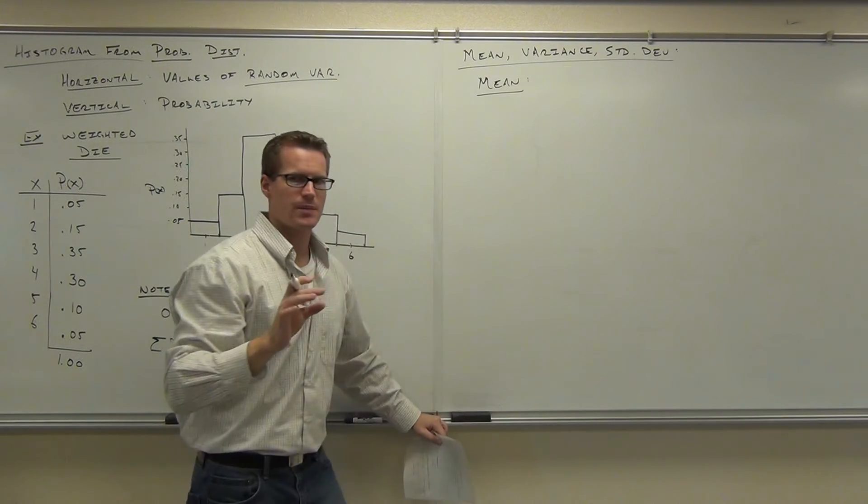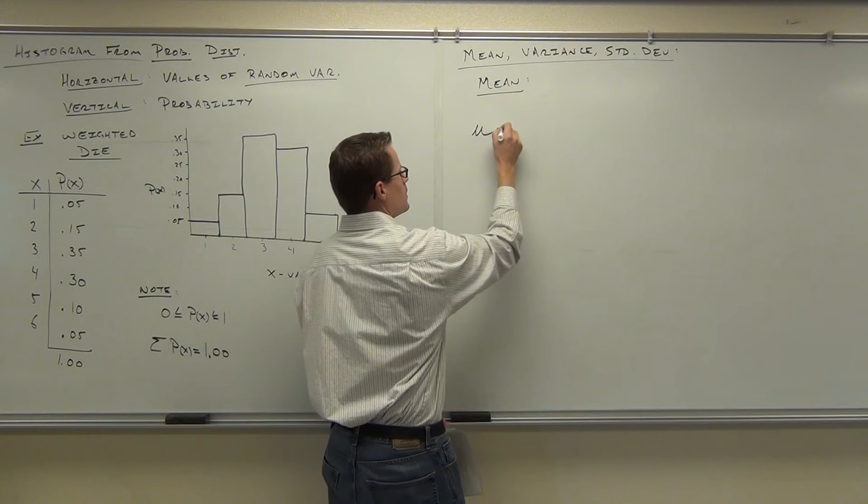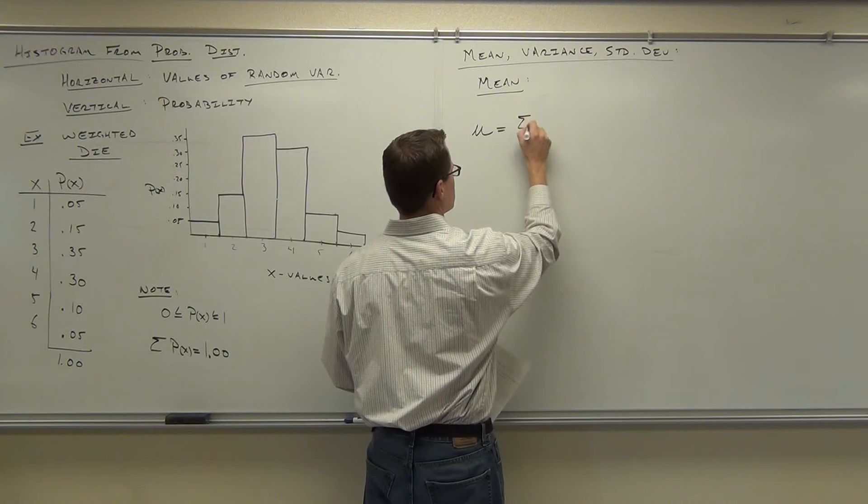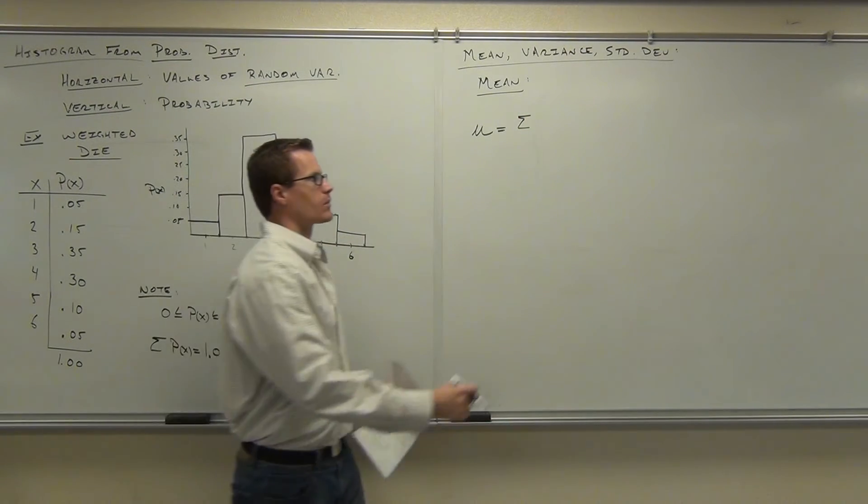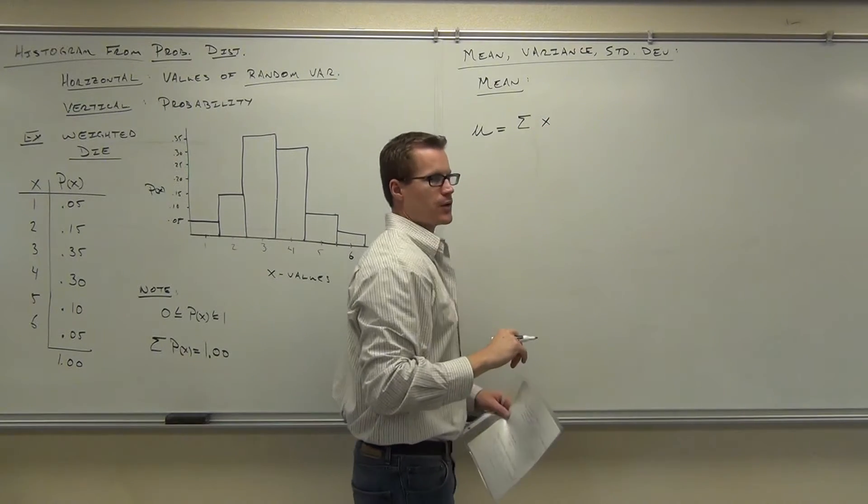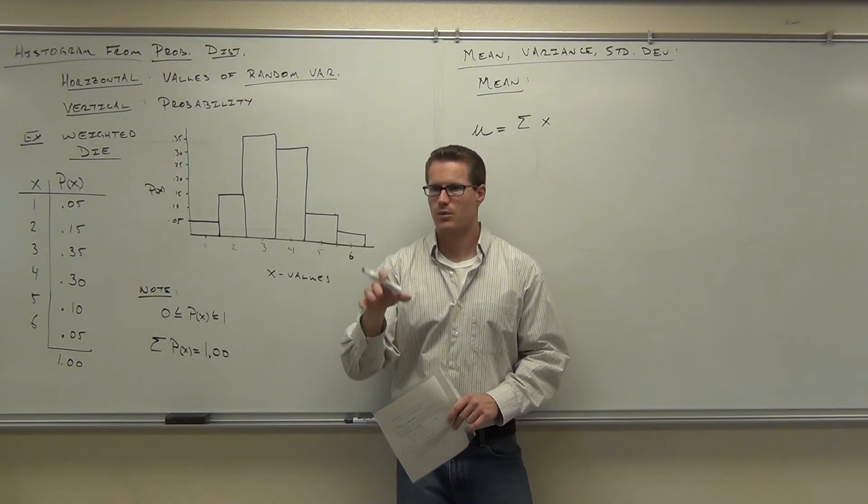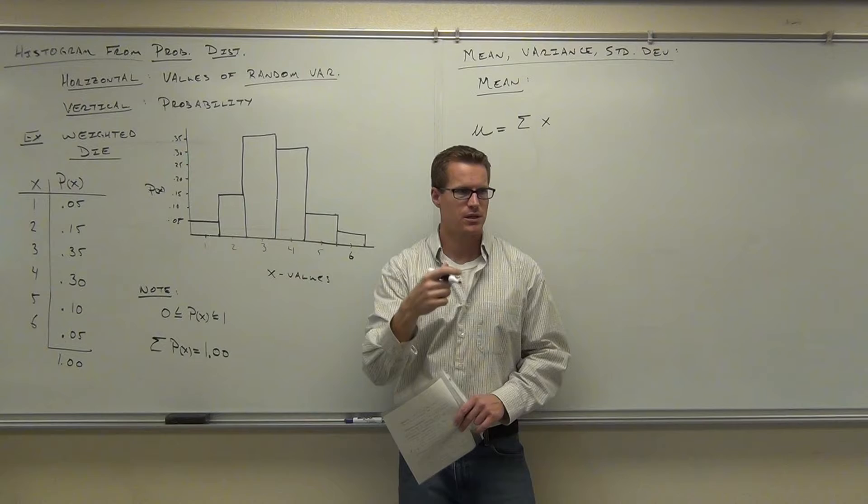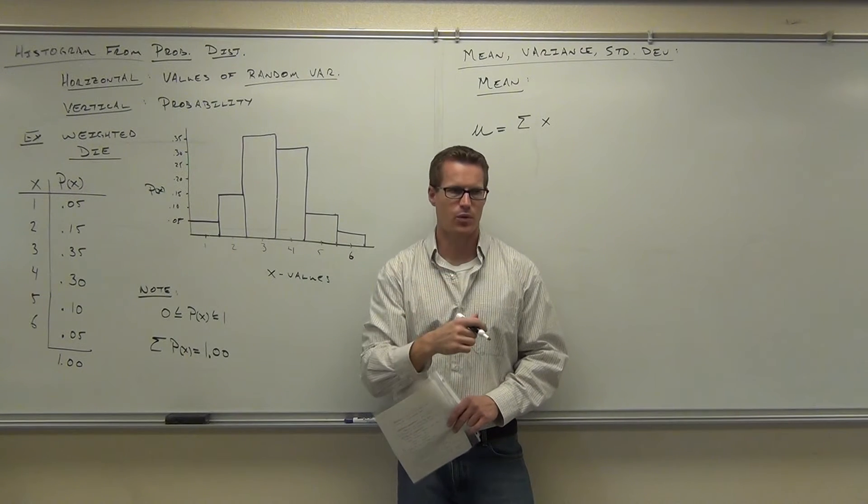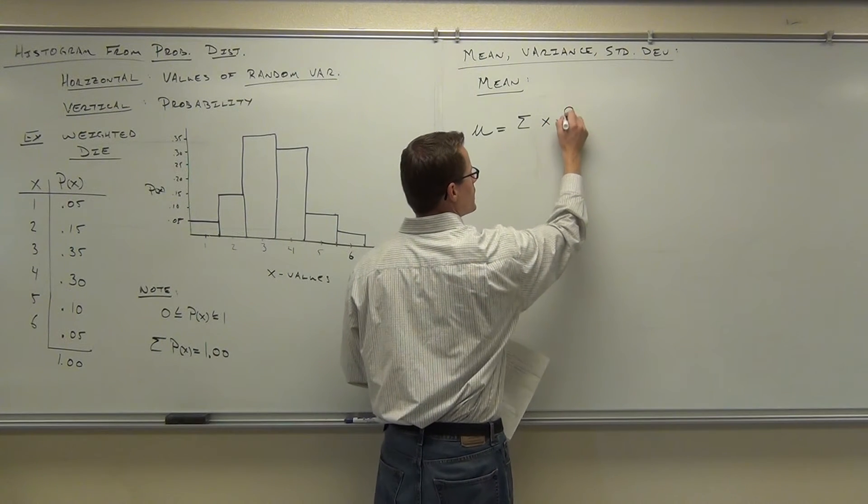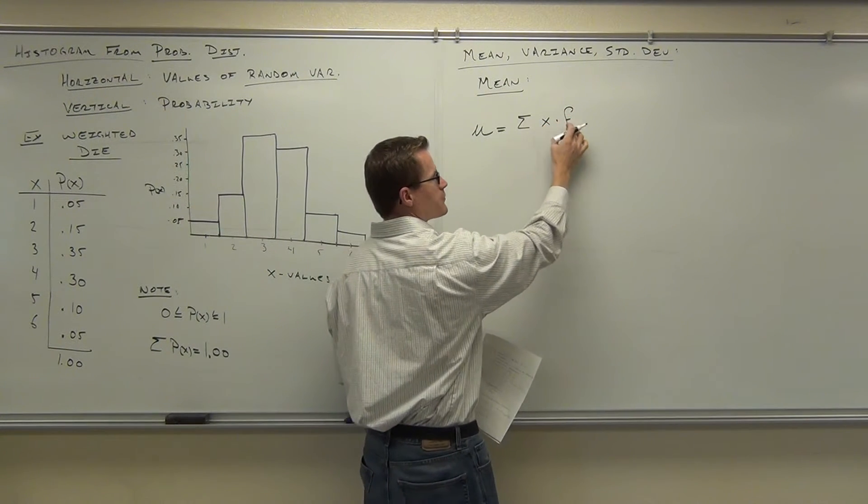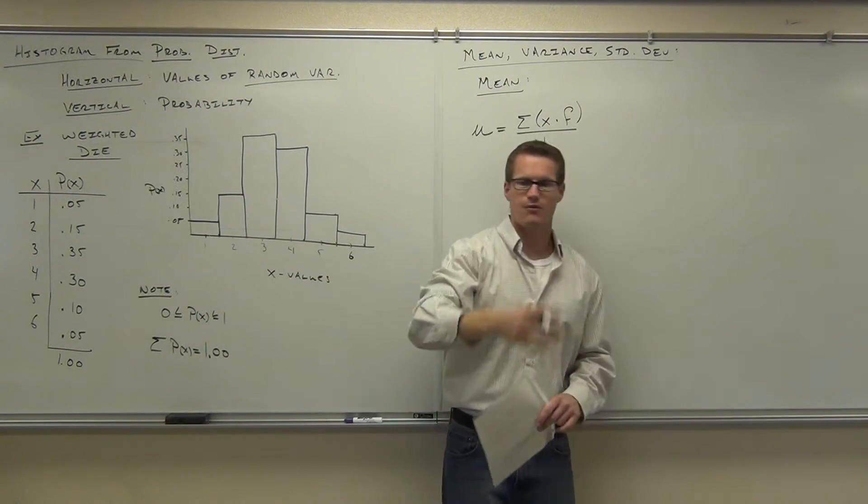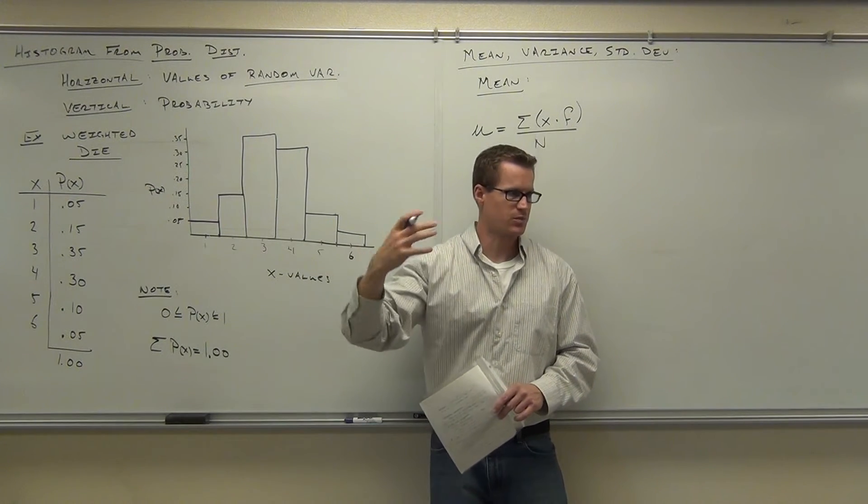If you remember, this is from a long time ago, but the mean of a frequency distribution was this: you added up every value. If you don't remember this, go back and watch the video, but for a frequency distribution, the x value was actually the midpoint of your class. Do you remember that? That was the midpoint. We had x, the midpoint, times the frequency for each class.